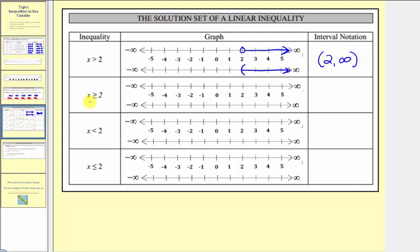For x greater than or equal to two, the only difference is that two is now included. Using open and closed points, we use a closed point on two and graph to the right. The closed point indicates two is in the solution set. The second method uses a square bracket opening to the right. In interval notation, this is [2, ∞) — a square bracket because two is included, and a rounded parenthesis for infinity.